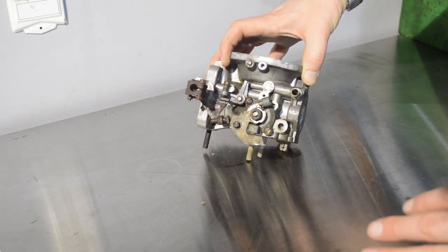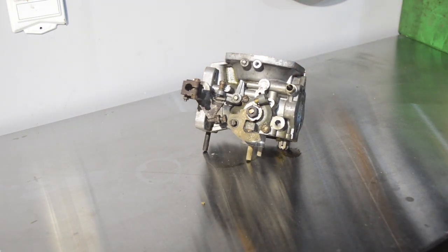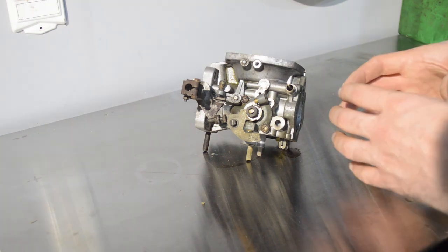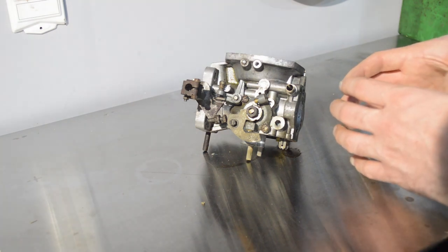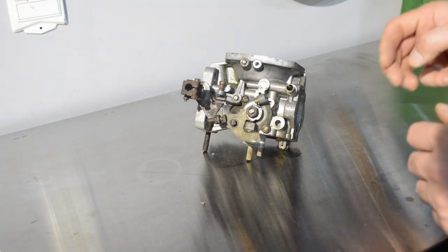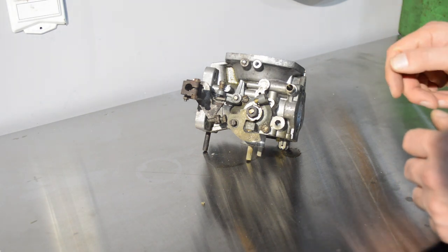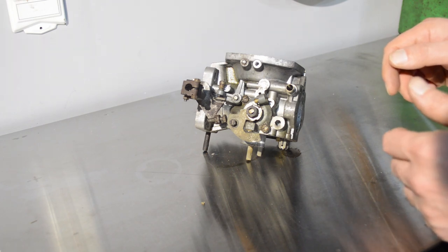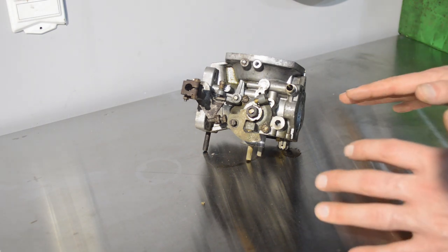Now later on, you started having charcoal canisters. I haven't got one here to show you, but I'm sure you could picture it. It's kind of a big black cylinder and it'll have either two or three ports on the top of it. One of those ports is going to go to the fuel tank, and that's for fuel tanks that do not have a vented cap.